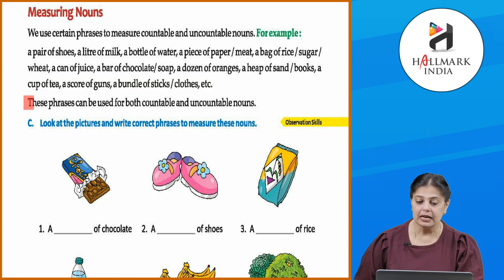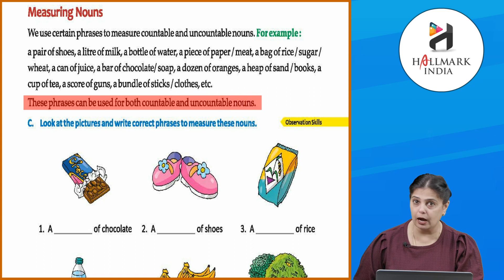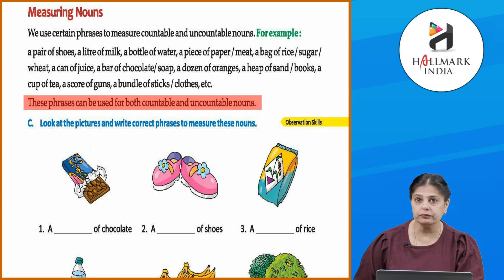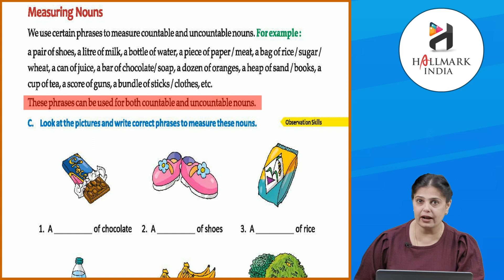So these phrases can be used for both countable and uncountable nouns. Instead of mentioning two shoes, hum kya mention karte hain — a pair of shoes. Instead of one paper, it's a piece of paper. Instead of one kg of meat, hum bolte hain a piece of meat. And rice or sugar — hum bolte hain a bag of rice or a bag of sugar.